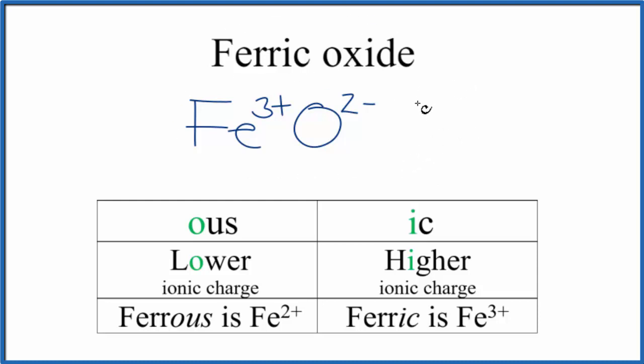There's an easy way to figure out what these subscripts can be - it's called the crisscross method. If we put the 2 here and the 3 here and clean these up, we end up with Fe2O3.